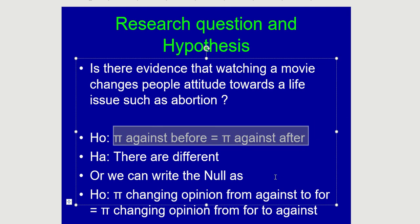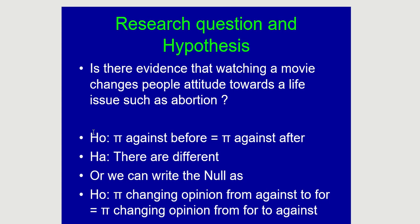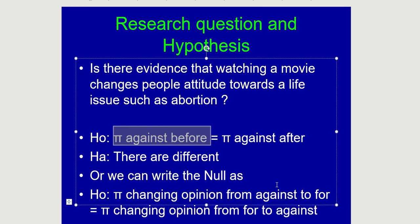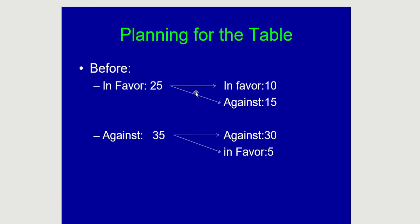Some students wonder why we test the proportion against abortion rather than the proportion in favor. It's exactly the same thing. Every time you have a categorical outcome — yes or no — you can pick which of the two is your success and work with it. Testing proportion against abortion before equal proportion against abortion after gives exactly the same results as testing proportion in favor before equal proportion in favor after, because if the proportion against changes, that automatically means the proportion in favor changed.